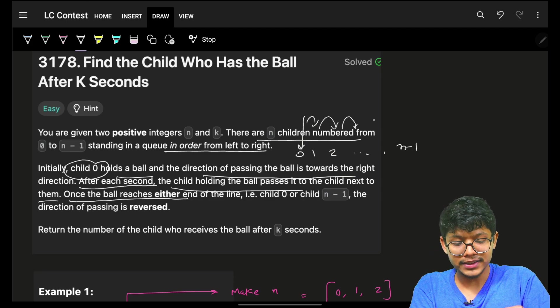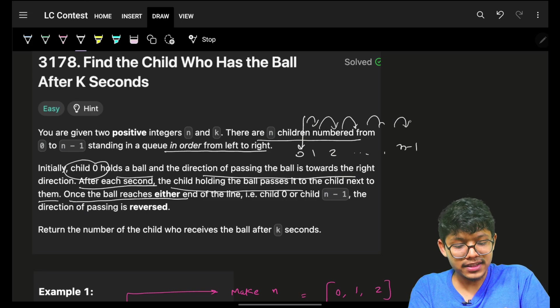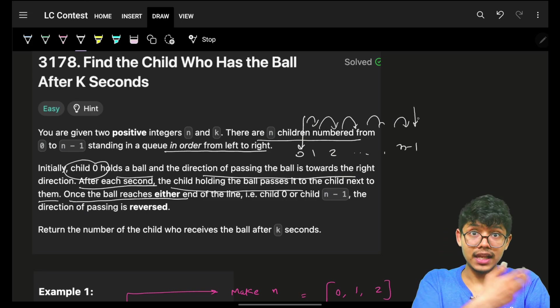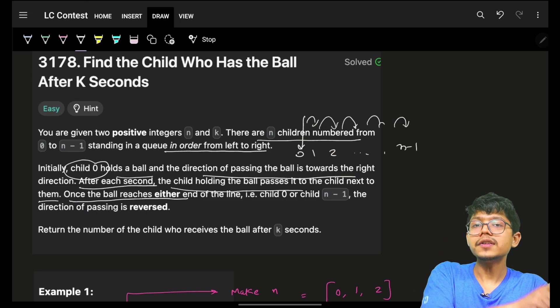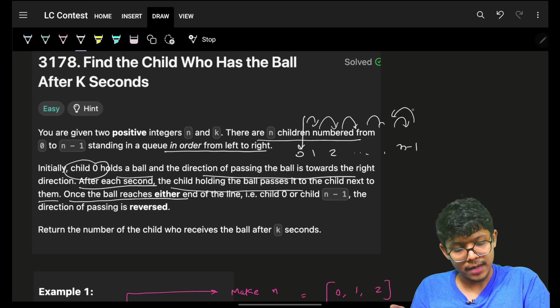But once the ball reaches either end of the line, as it keeps passing to the right and reaches the end of the line, which means the last child, it has to reverse the direction of the pass. Now, it will start passing to the left each second.